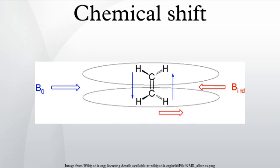The total magnetic field experienced by a nucleus includes local magnetic fields induced by currents of electrons in the molecular orbitals. The electron distribution of the same type of nucleus usually varies according to the local geometry, and with it the local magnetic field at each nucleus.